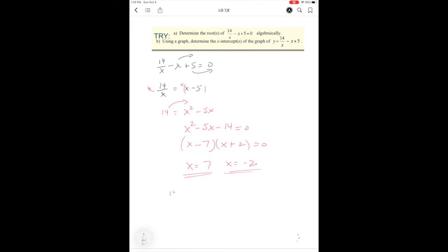So I'm going to plug in 14 over 7 minus 7 plus 5, and I'm going to hope it equals 0. So 2 minus 7 plus 5 is 0. So check mark. And then if you do the same here, it's a check mark. So they both work.